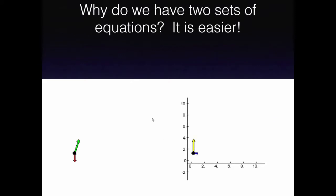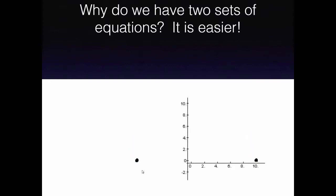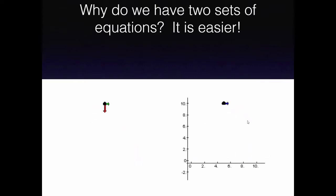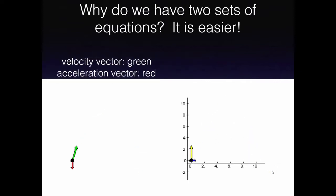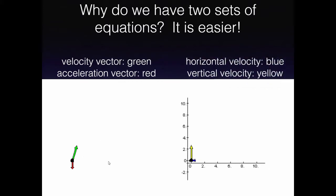Let me show you an animation that makes clear why we'd want to do that. On the left, the green vector is the entire velocity vector, and the red vector is g — the acceleration due to gravity — which changes angle and magnitude at each instant. On the right, we see the components: the blue horizontal component is constant in magnitude and direction, while the yellow vertical component changes magnitude but its direction is either up or down.